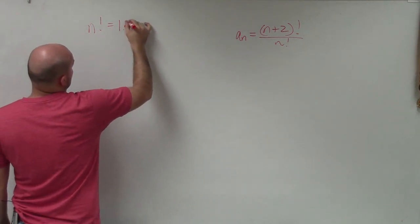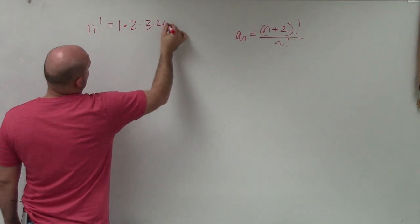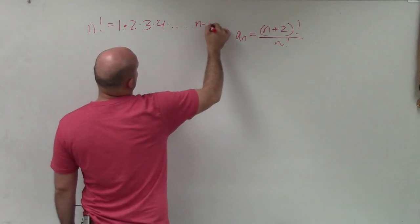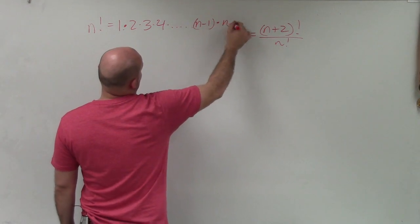Remember, it's 1 times 2 times 3 times 4 times dot dot dot n minus 1 times n, right?